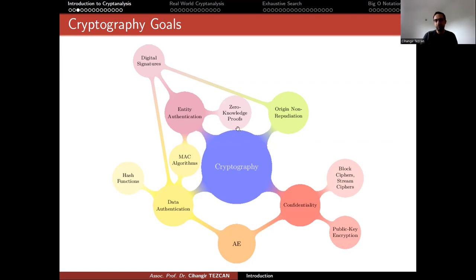So cryptanalyses of these different algorithms actually are completely different. But another thing we solve is the data authentication. So you can use hash functions here. So you provide integrity in other sense. But we can use message authentication codes or authenticated encryption algorithms. For the entity authentication, you can use zero-knowledge proofs, again, message authentication codes or digital signatures. And for origin non-repudiation, we can use digital signatures. So these are very different types of algorithms.